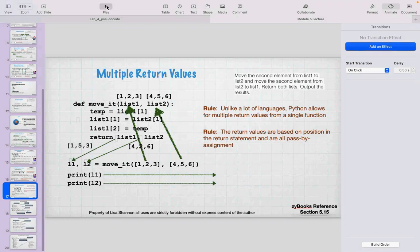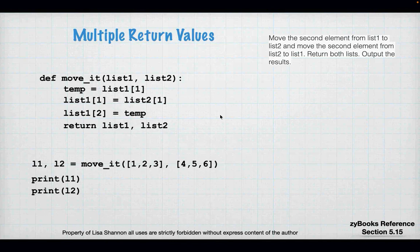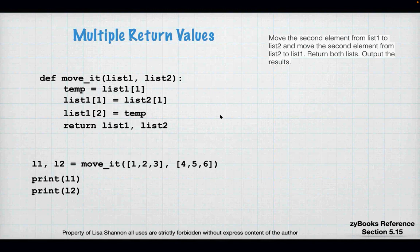Multi-returns — these are awesome, and something very few languages have. Java, C, and C++ don't have multi-returns. In Python, you don't have to create a structure just to return two, three, or ten elements from a function — you can just return them. It makes code simpler because you're not defining something else like a list to put things in.